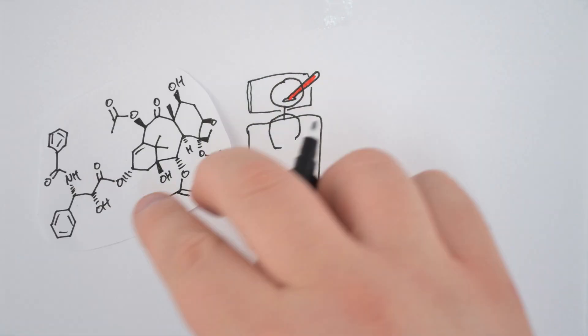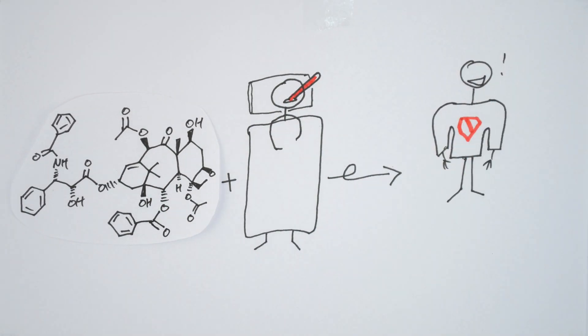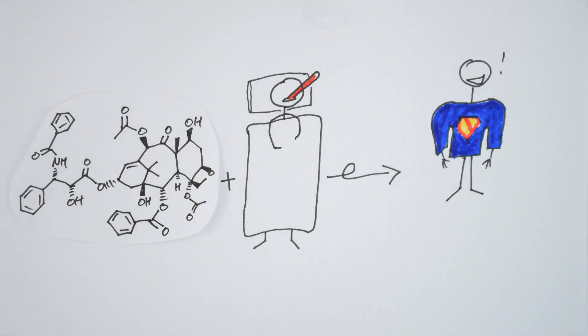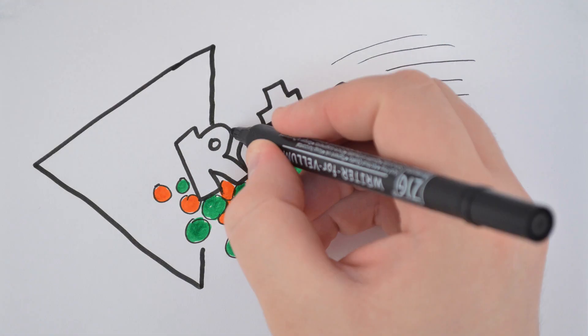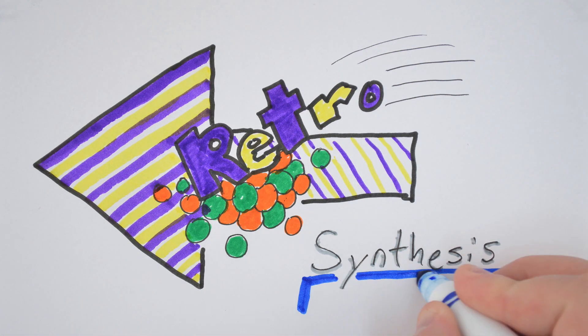First, a chemist starts off with a target molecule, a natural product that is shown to have desirable bioactivities, and usually, through the logic of retrosynthesis, devises a means of generating this natural product.